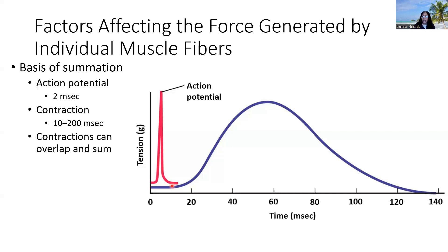In summation, the contraction is still ongoing and being sustained when more action potentials arrive, so the muscle never relaxes. The subsequent action potentials then generate more force. Summation can be explained by the mechanism where the contraction exceeds the time of a single action potential.